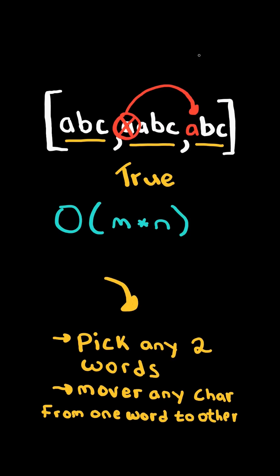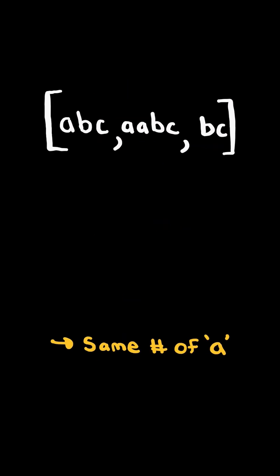We will solve this in O of M times N time, where N is the number of words and M is the average word length. In this case, each word must have the same amount of A's, the same amount of B's, and same amount of C's.